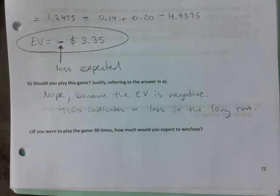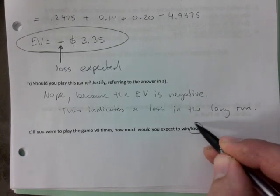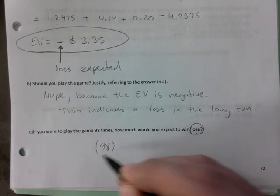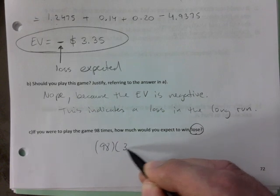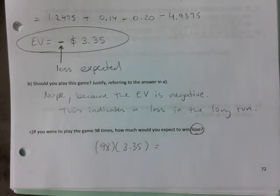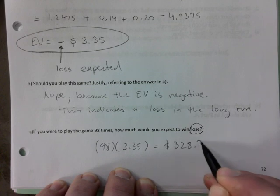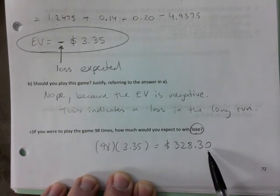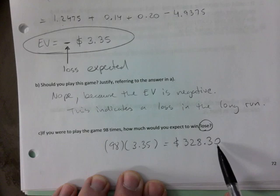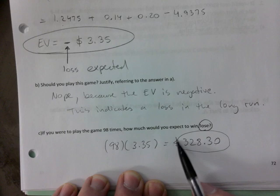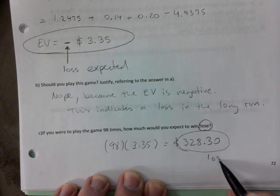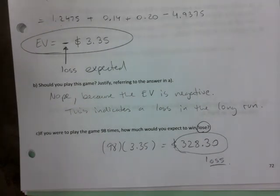So if you were to play the game 98 times, how much would you expect to win or lose? We've determined that you're going to lose, so you just go 98 and multiply that by the 3.35. And I posted the key of this online. Make sure you put that zero down - your calculator doesn't put the zero, but if it's a dollar amount you have to have it. $328.30 loss.